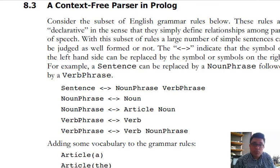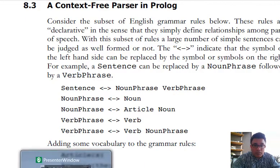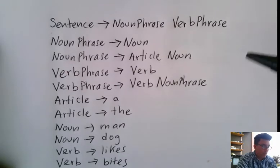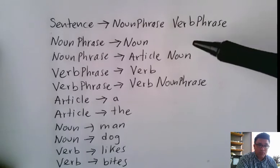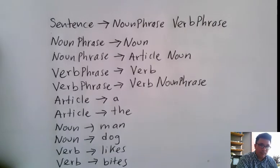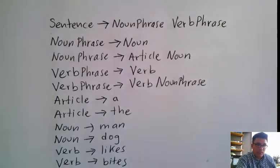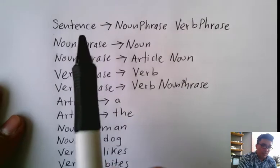Going back to that book on page 111, they initially have the description of a context-free grammar. That context-free grammar uses the notation that we were using before, similar to the example that we were also working with previously when we were talking about context-free grammar. So this is a sentence, and that's a pretty easy implementation — I think we did something very similar before.